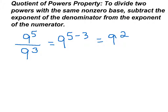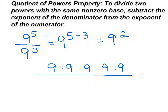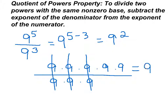If you'd written the original problem out, and you had 9 times 9 times 9 times 9 times 9 — 5 times — that's 9 to the fifth power over 9 to the third power, which is 9 times 9 times 9. If you cross out your factors, you would then end up with just two 9s, or 9 to the second.